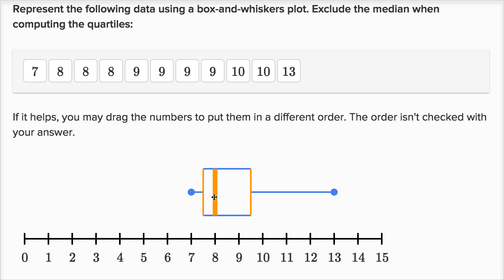But this middle line is going to be the median of our entire data set. Now the median is just the middle number. If we sort them in order, median is just the middle number. We have 11 numbers here, so the middle one is going to have five on either side, so it's going to be this nine.